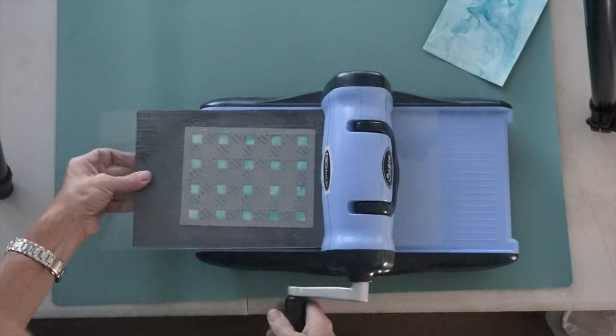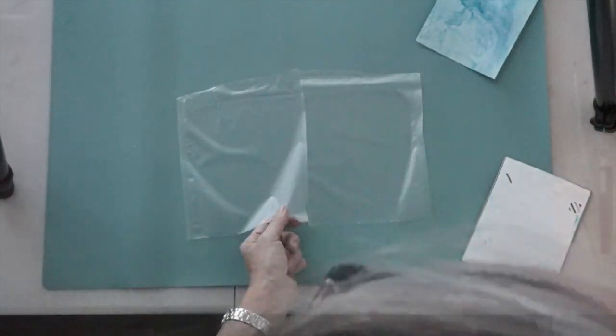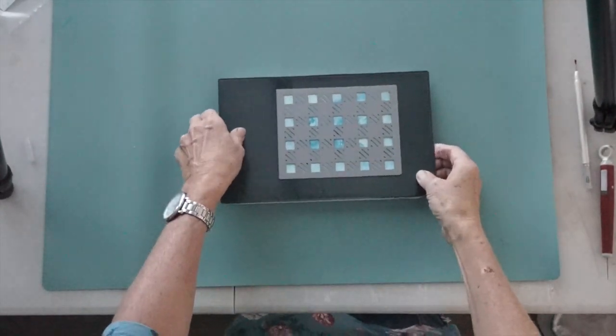I die cut the dry card panel with the Cozy Flannel background die and covered the front with some glad wrap press and seal to keep all the pieces intact.